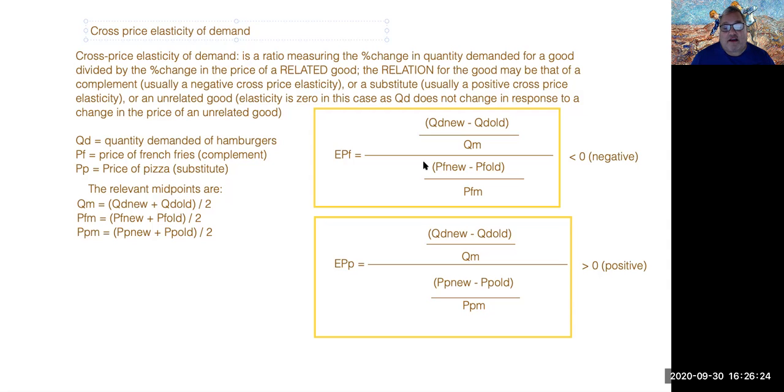So in this case, a higher price of pizza would generate a higher quantity demanded of hamburgers, and so the cross price elasticity for a substitute would be a net plus.